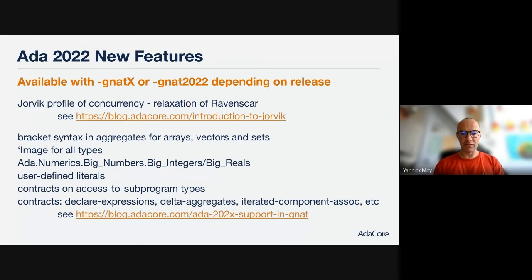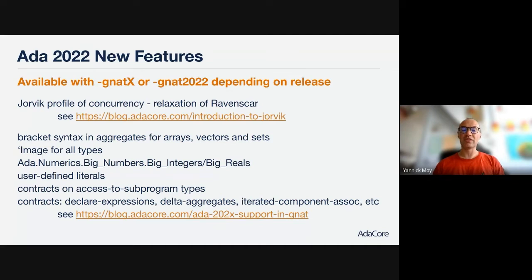You can look at a blog post that our colleague Pat Rogers wrote explaining the differences between the two. For example, Jorvik allows multiple entries per protected object, contrary to Ravenscar. Jorvik also allows queues to have more than one element on an entry, contrary to Ravenscar. These are the kinds of things that allow examples Tullio showed that would not be allowed in Ravenscar. Now, going outside of concurrency, there are many things that facilitate use of the language.